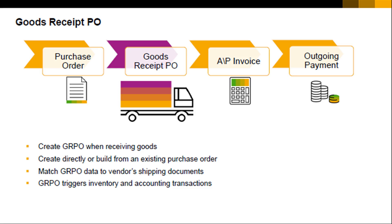A goods receipt PO can be created directly by selecting the document name in the module menu, or it can be built from an existing PO. If you are basing your goods receipt PO on an existing PO, you may copy all the data contained in the PO or use the Draw Document Wizard to select the data to copy from one or more existing POs.